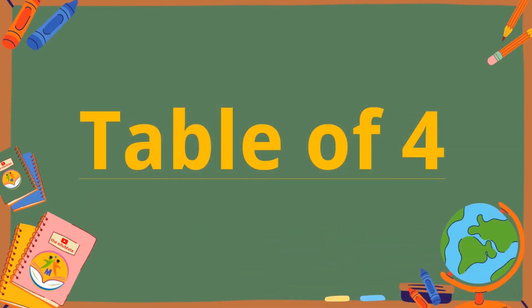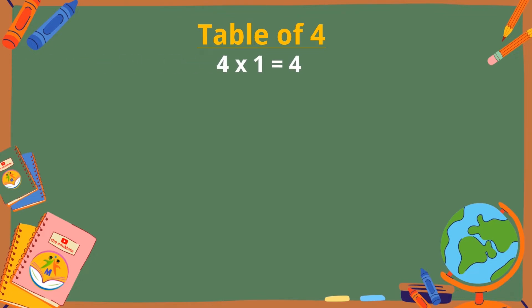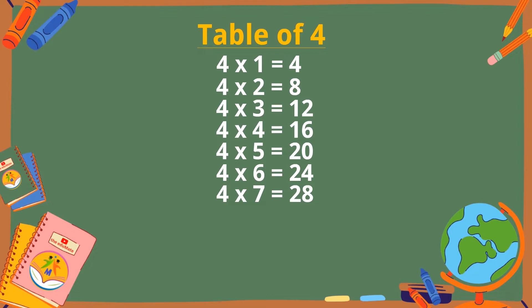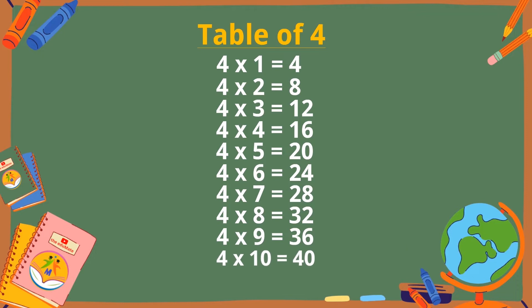Table of 4. 4×1 is 4, 4×2 is 8, 4×3 is 12, 4×4 is 16, 4×5 is 20, 4×6 is 24, 4×7 is 28, 4×8 is 32, 4×9 is 36, 4×10 is 40.